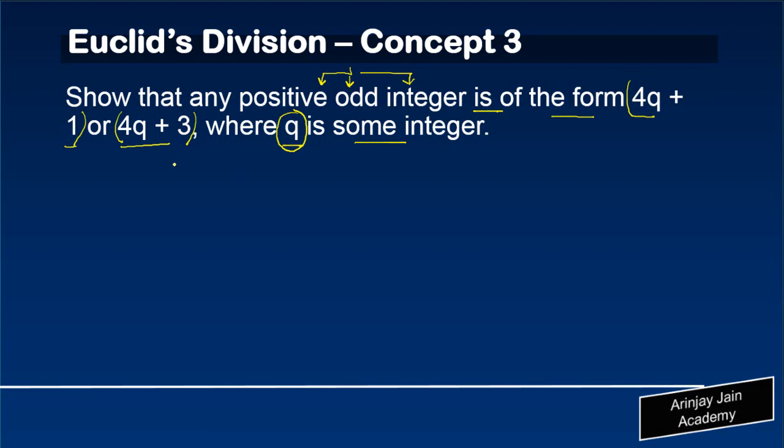Now, if you remember, we used to write the Euclid's division lemma, wherein we said that a is equal to bq plus r, where r is greater than or equal to 0 but less than b.